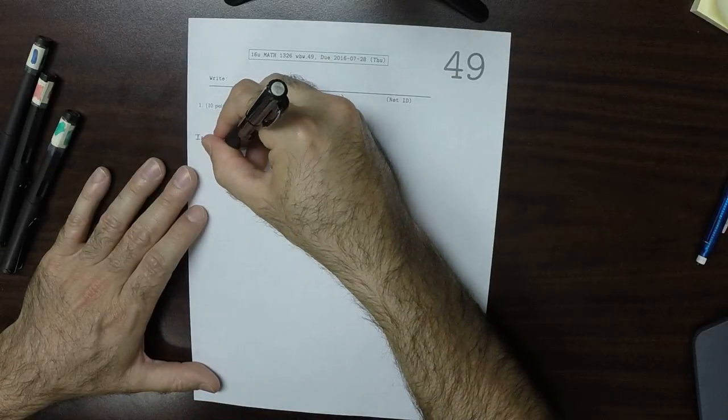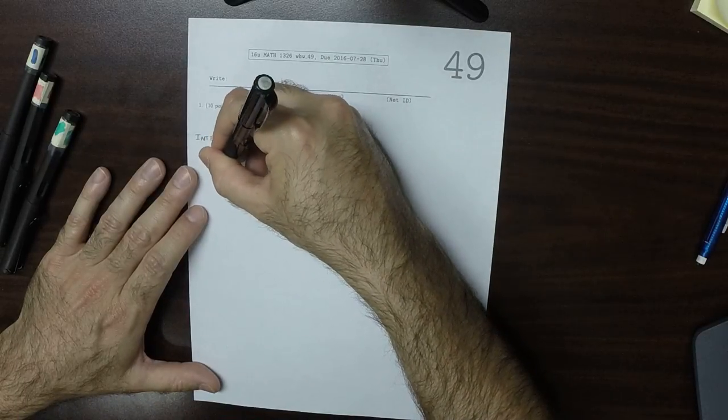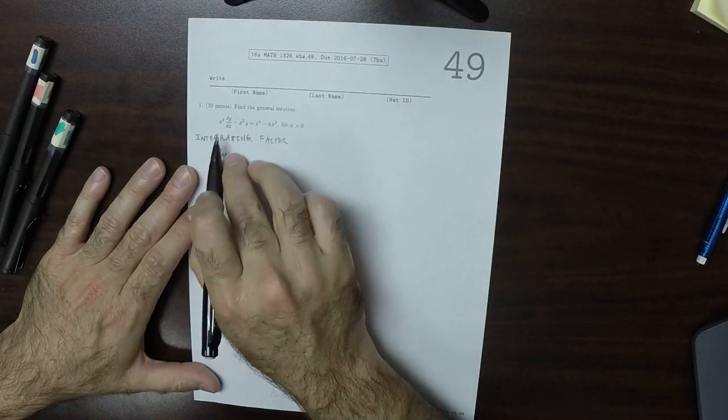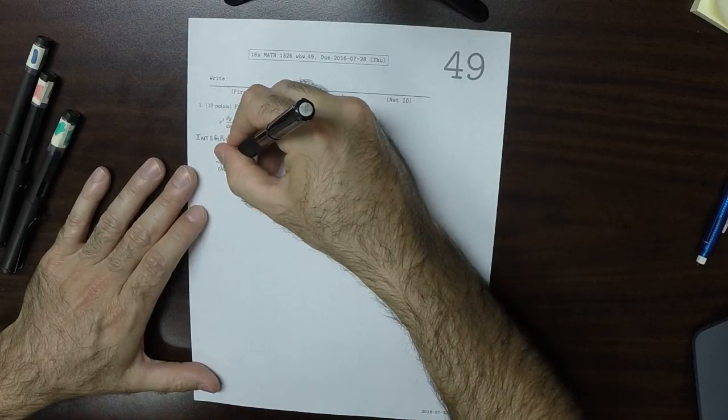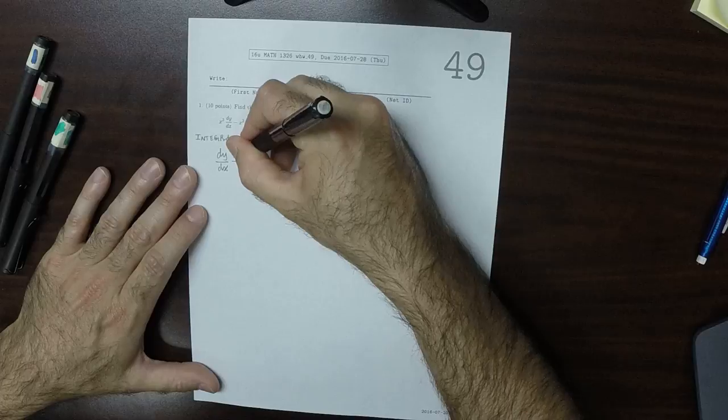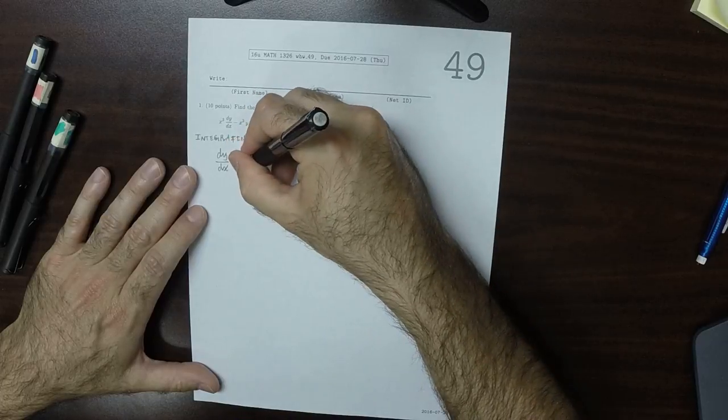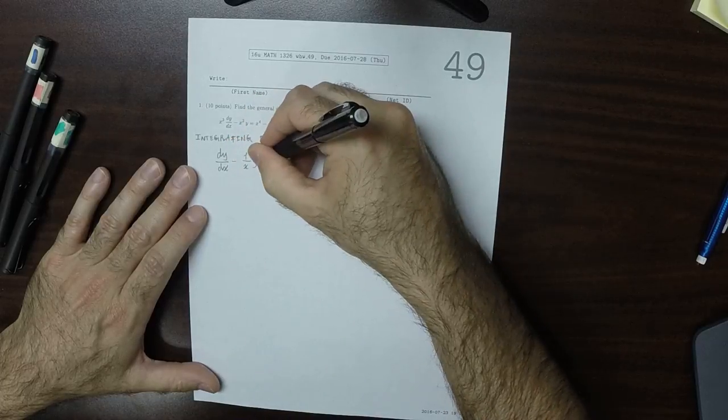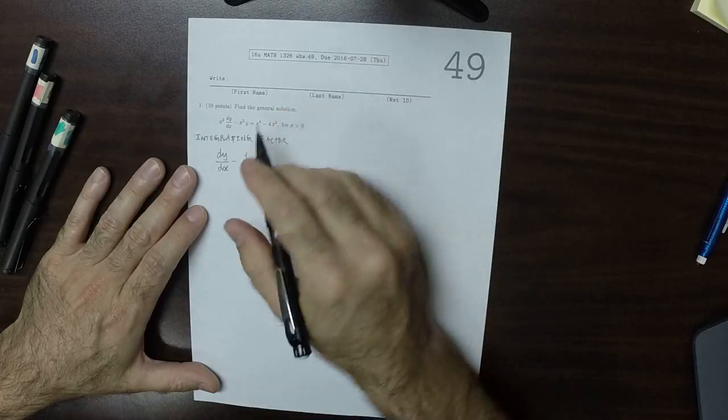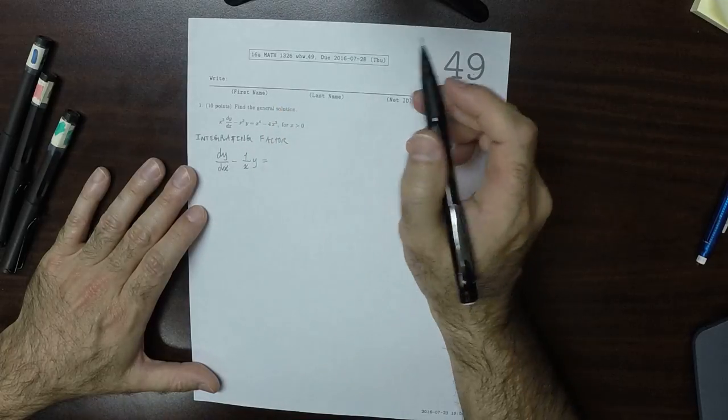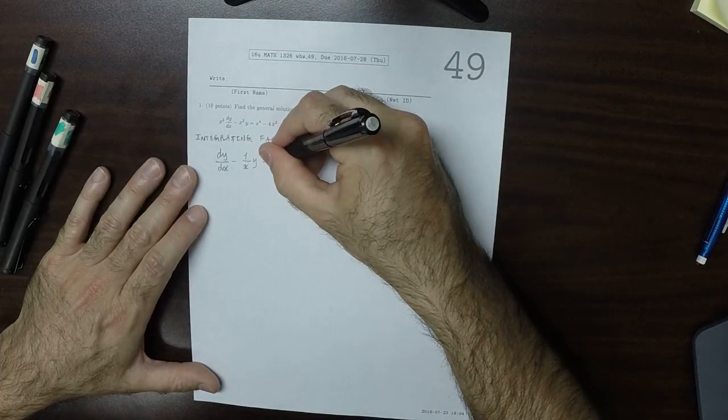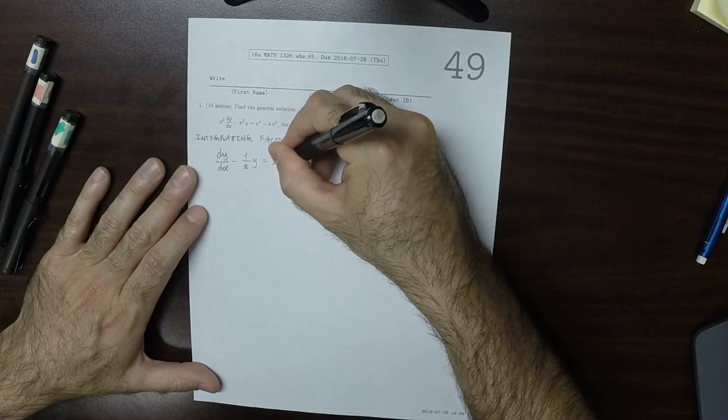So the first thing is to get the differential equation in the standard form. So I'll divide everything by x cubed. So that would be dy dx minus 1 over x, y, because x squared over x cubed is 1 over x, is x minus 4.